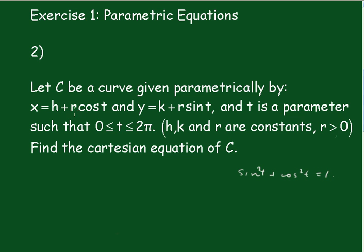So we'll just do a bit of rearranging here. So take the first one and that will be x minus h divided by r will be equal to cos t. And we'll have y minus k divided by r equals sin t.